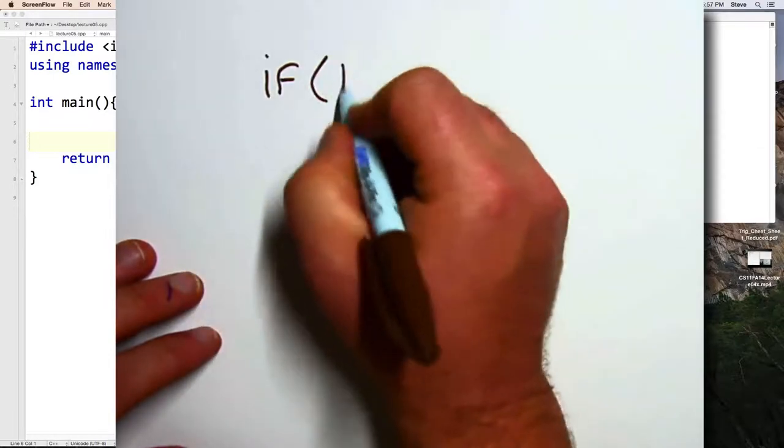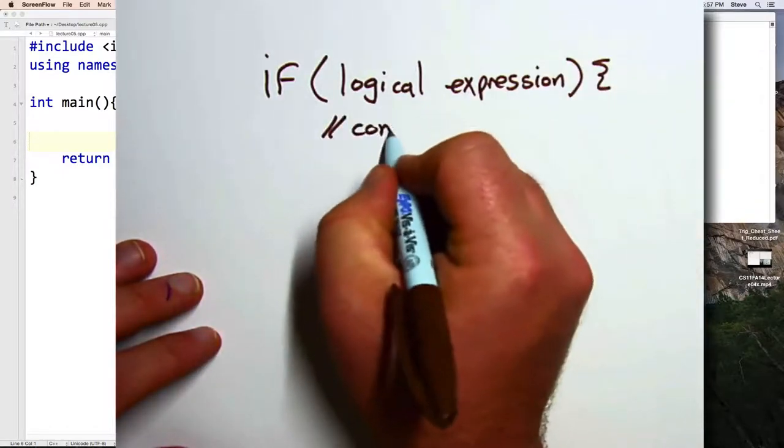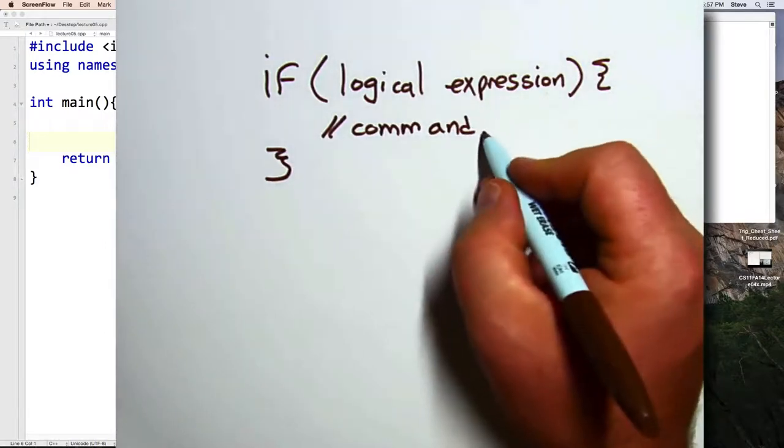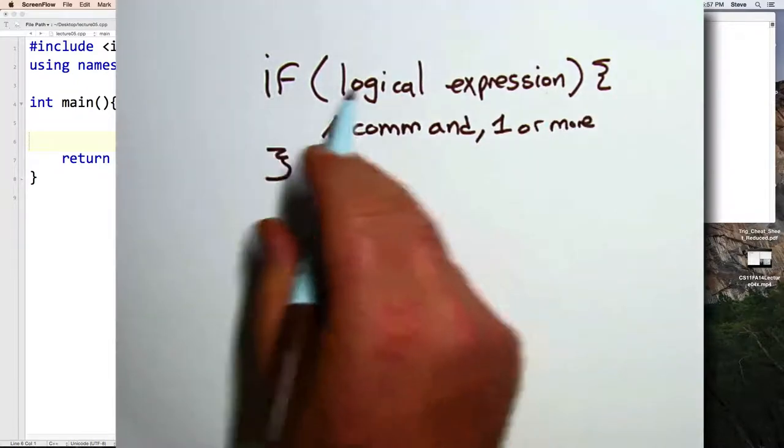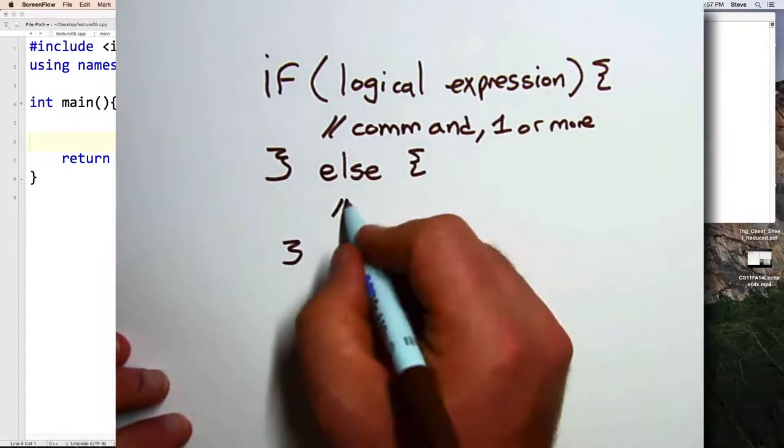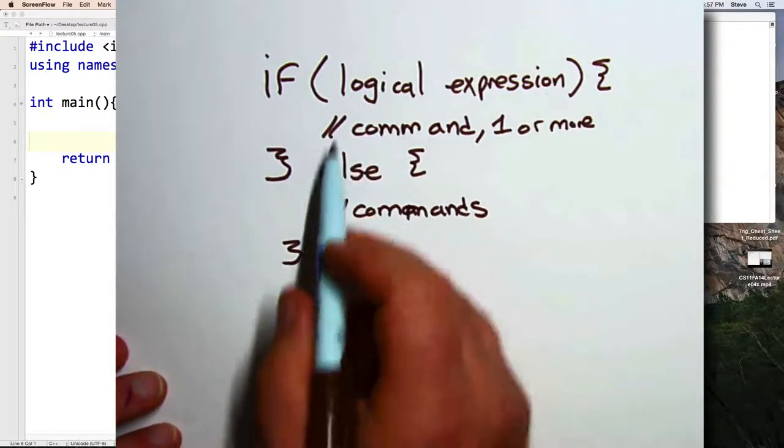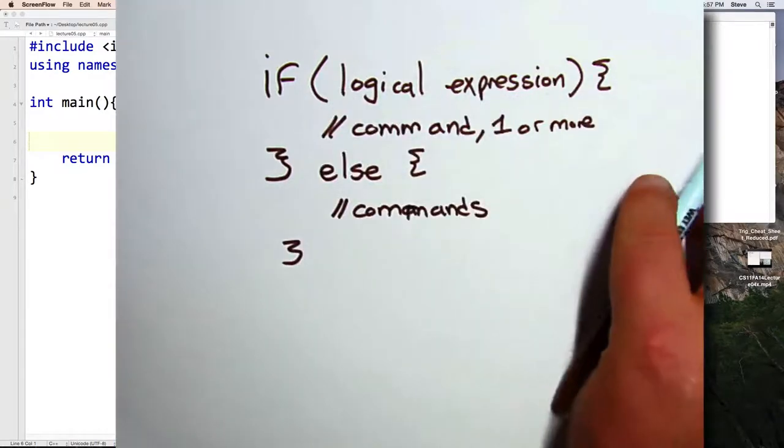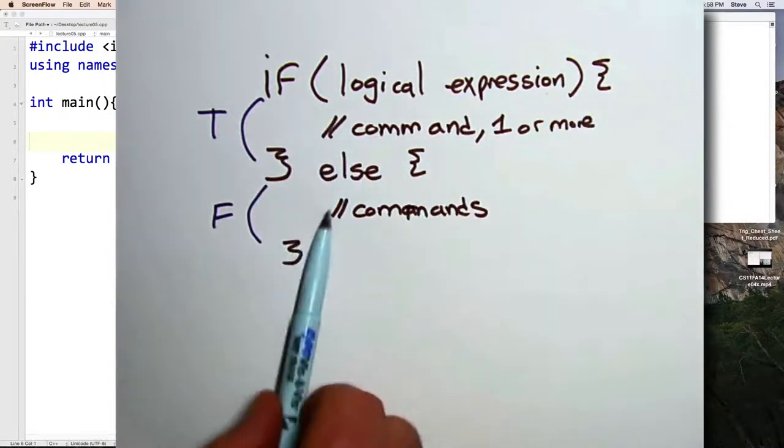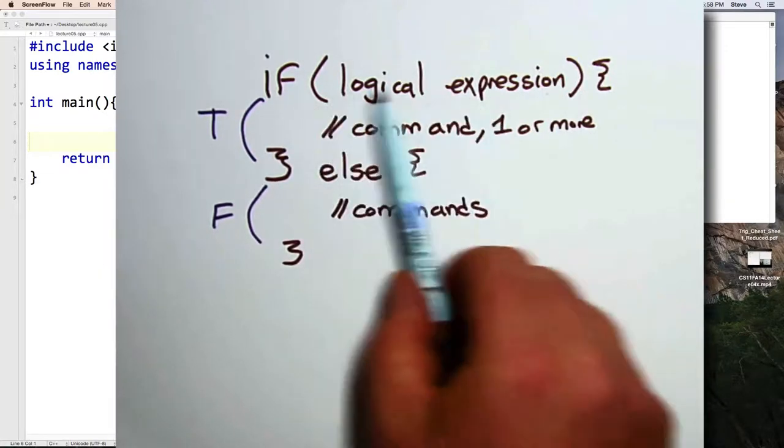Now, in general, we might say that the if command looks like this: a logical expression, and then one or more commands. The if has an optional else clause written this way, and we can also put commands in here. If you have both the if and the else, then this logical expression will be evaluated. If it's true, we execute those commands. If it's false, we execute those commands. It will always be one of those two. It can't be both. And it can't be neither. Because this expression here has to be either true or false. Those are the only two possibilities.